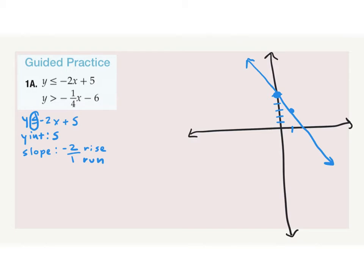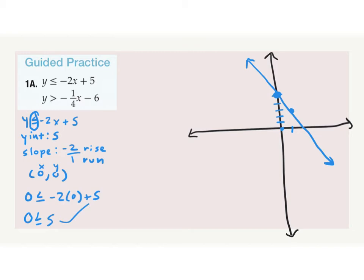Next we figure out where to shade. We plug in (0, 0): 0 ≤ −2(0) + 5, so 0 ≤ 5. Is this true? Yes. So we shade where (0, 0) is — to the left side of the line.